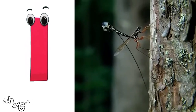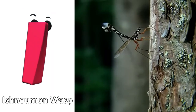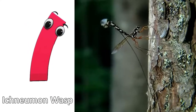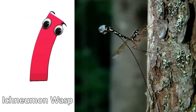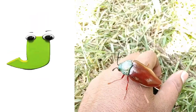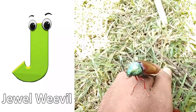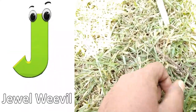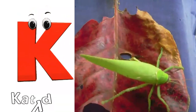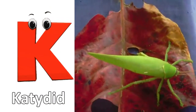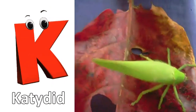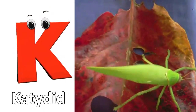I is for ichneumon wasp, ichneumon wasp. J is for jewel weevil, jewel weevil.